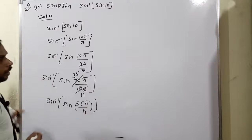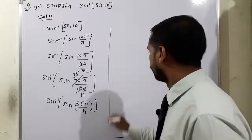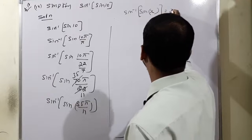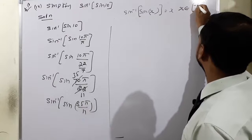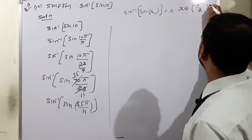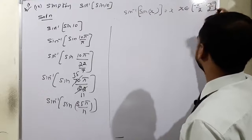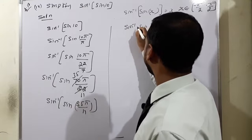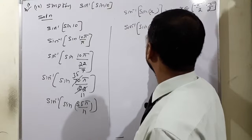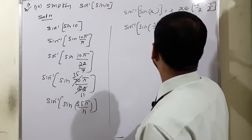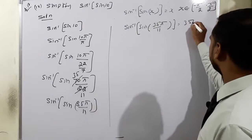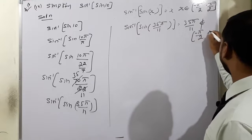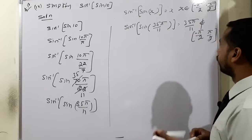Now we apply the normal method. The condition is: sin inverse of sin x equals x when x belongs to [−π/2, π/2]. We need to check the value. What is sin inverse of sin(35/11)? The value 35/11 does not belong to [−π/2, π/2], so we need to rearrange it.